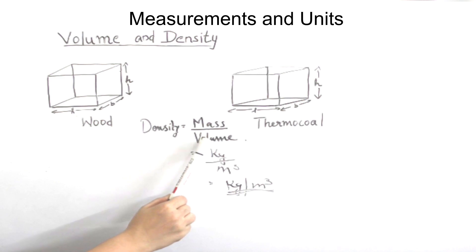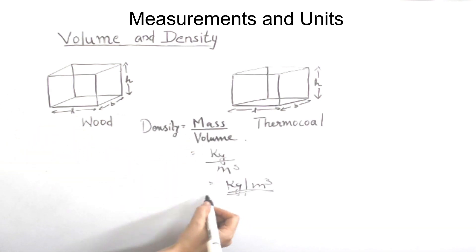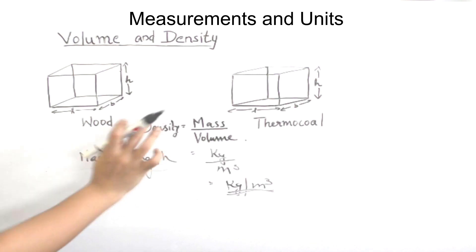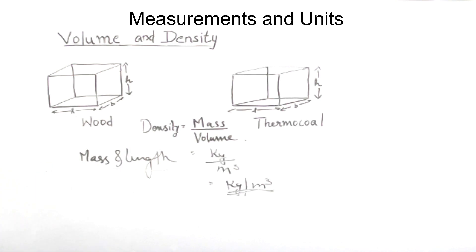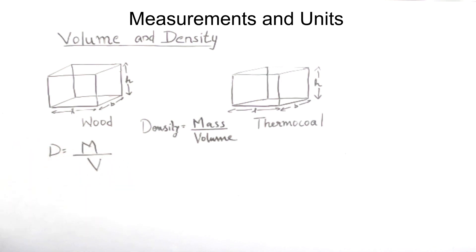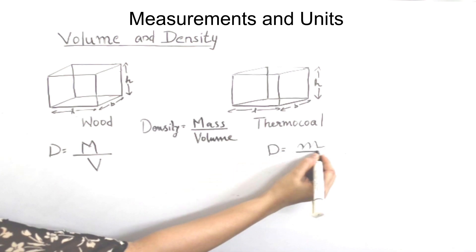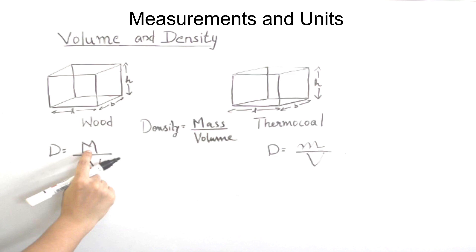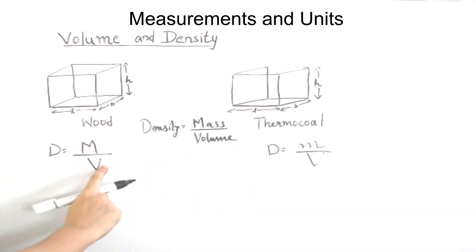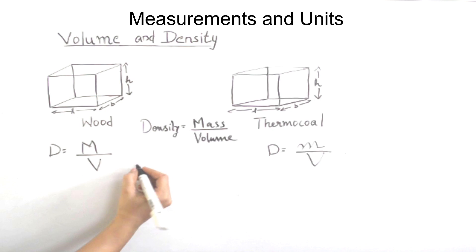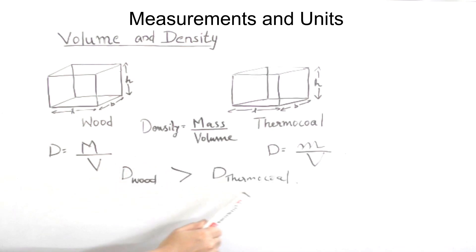Density is derived from fundamental quantities: mass and length. Density equals mass by volume. When two objects have the same volume but different masses — like wood and thermo-col — the density differs. Since the volume is the same but the mass of wood is greater, the density of wood is greater than the density of thermo-col.